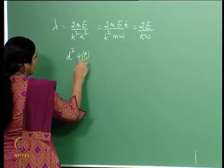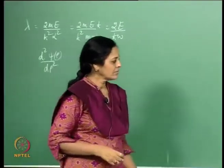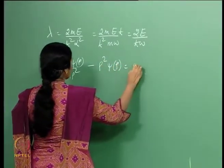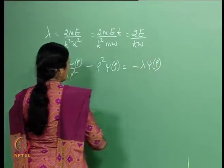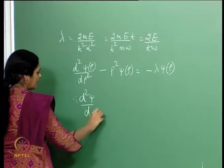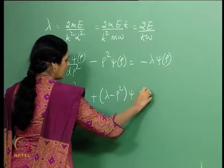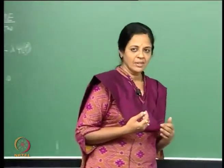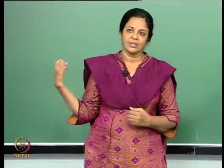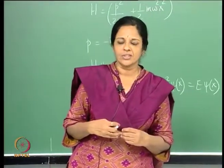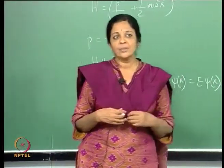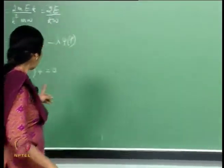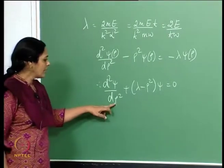The equation becomes d²ψ(ρ)/dρ² + (λ - ρ²)ψ(ρ) = 0. This is cast entirely in dimensionless quantities: ρ (dimensionless position) and λ (dimensionless energy). I have introduced a length scale via α, so ρ = αx is dimensionless.